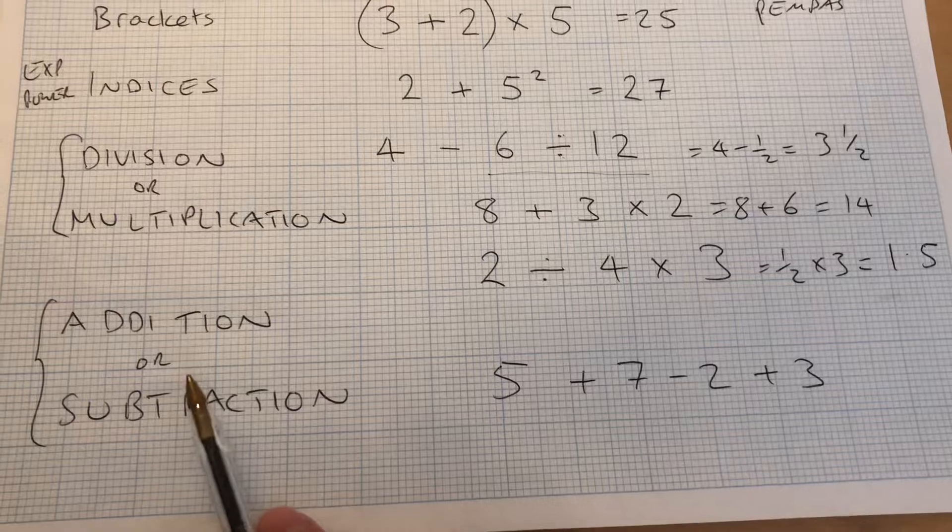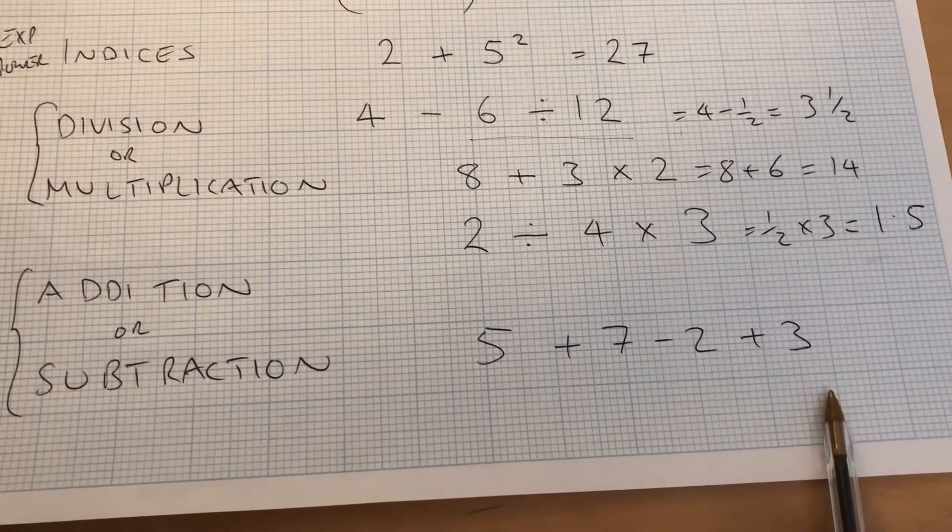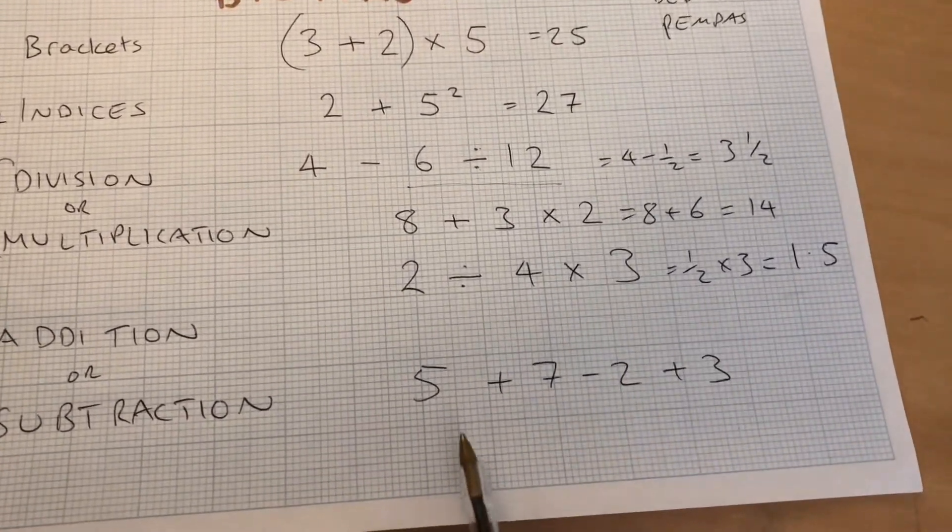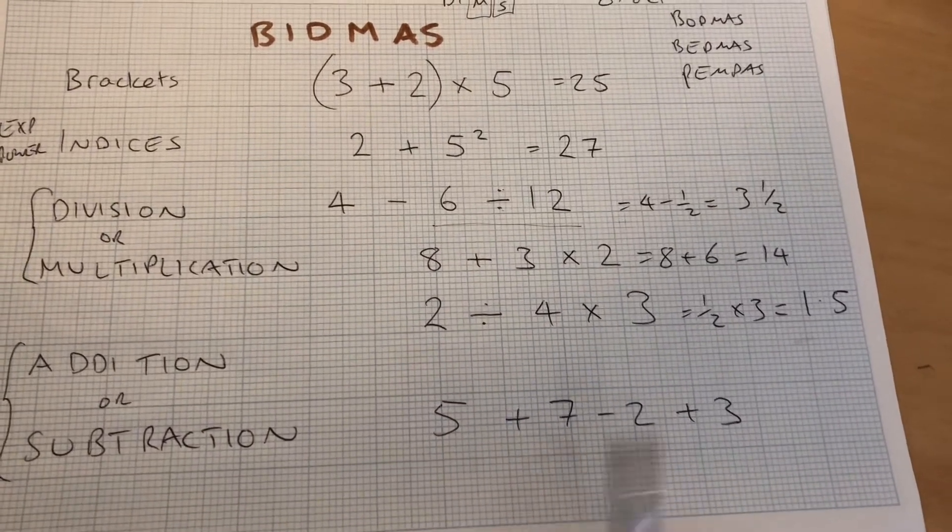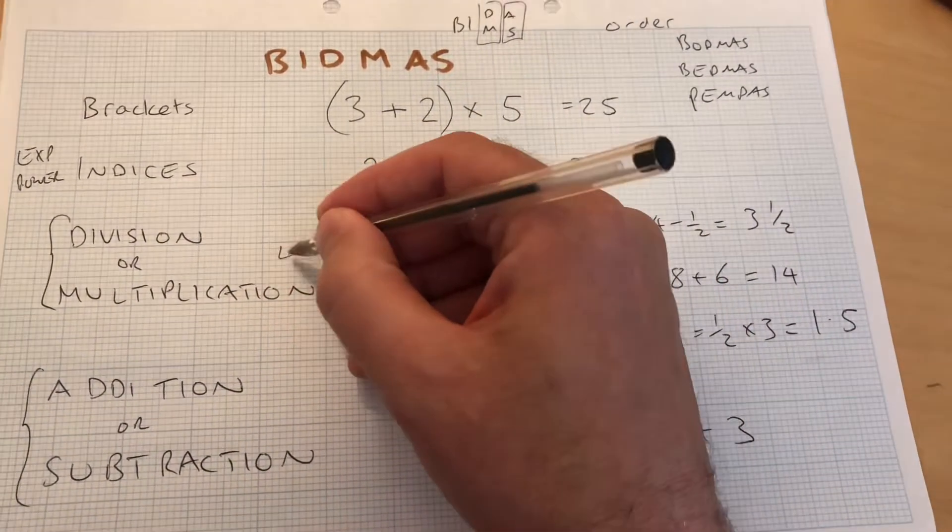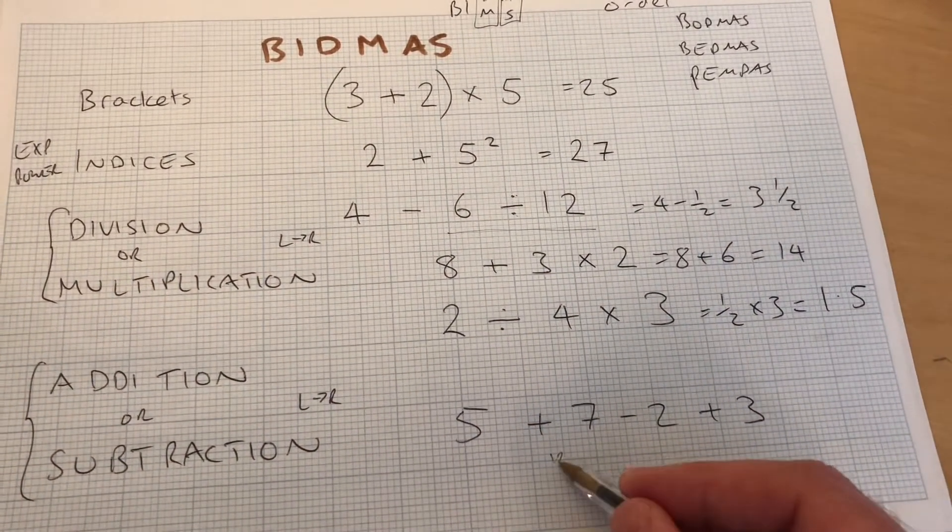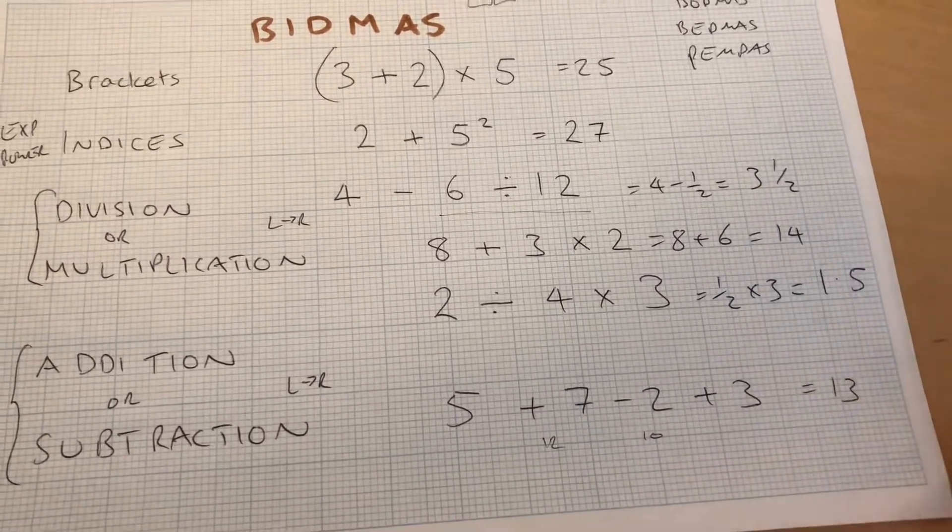And the same goes for this last one here. I put both of them into this one sum because they don't have a more important order. I don't go and do all the addition and then subtraction. I just read left to right. So for both of this one, left to right and this one left to right. 5 plus 7, which is 12, minus 2, which is 10, plus 3. I get 13.